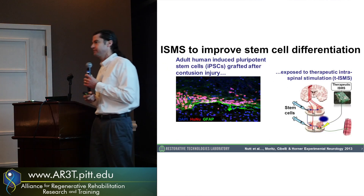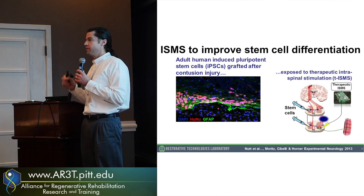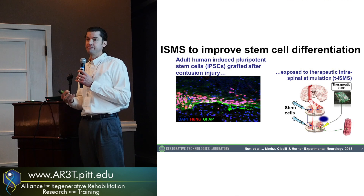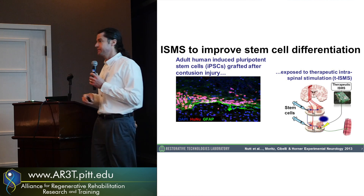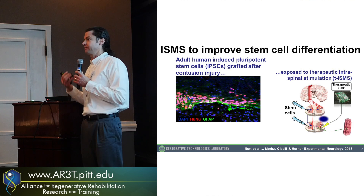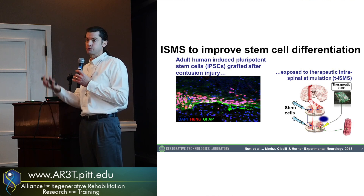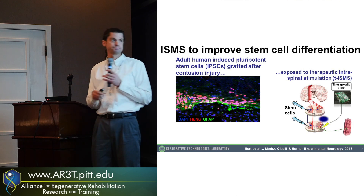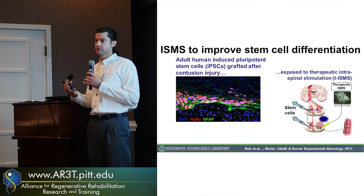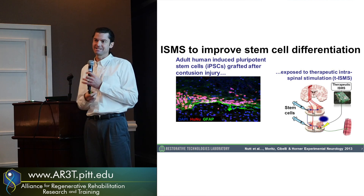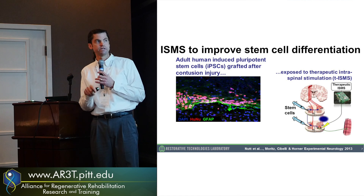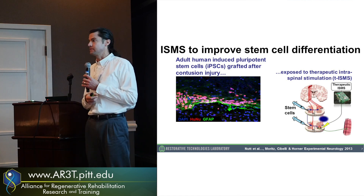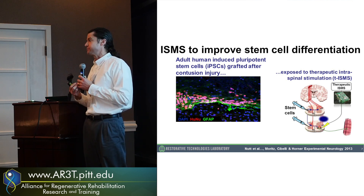We took a side trip with our collaborator Phil Horner to see whether intraspinal microstimulation could affect the fate or survival of transplanted iPSCs — induced pluripotent stem cells. These are human iPSCs transplanted into the spinal cord, and we delivered that same therapeutic stimulation because in pilot experiments, cells seemed to survive better and their fate was more differentiated towards neurons as opposed to astrocytes, which is kind of the default. Unfortunately, that didn't hold up in a larger study — just one example of tantalizing preliminary evidence that didn't pan out. But we maintain a long-term interest in using electrical or optical stimulation to influence grafted stem cells.